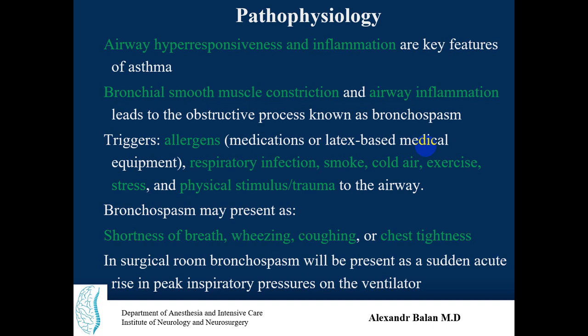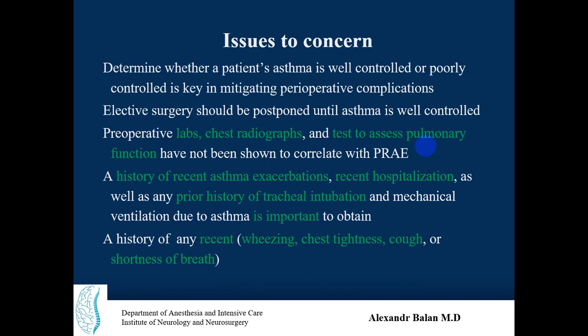Bronchospasm may present as shortness of breath, coughing, and chest tightness. In the surgical room, bronchospasm will present as a sudden acute rise in peak inspiratory pressure (PIP) on the ventilator. During anesthesia, you will see on the ventilatory machine a sudden increase in PIP and positive end-expiratory pressure (PEEP), and volume control settings will show an increase in system pressure.